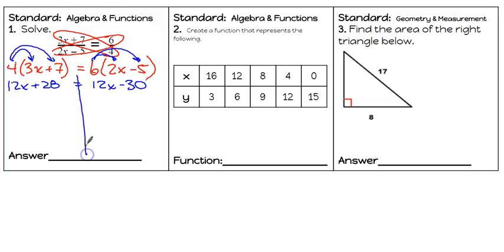We're going to identify our terms and subtract 12X from both sides. That cancels, which leaves us with 28 equals negative 30. That of course is not a true statement, so this has no solution.